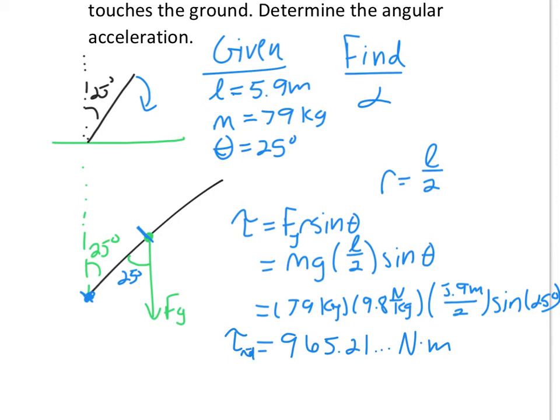So this is the only torque acting on the object, which means this would also be the net torque. Also, if we're looking at the way it's causing the rotation, it's causing the pole to rotate the way I drew my diagram this way, clockwise, so the torque would be negative.